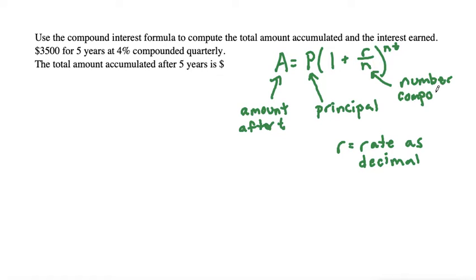Now that we have our formula and we've defined our variables, let's start plugging things in. Our total amount is what we're looking for. A equals the principal, which is the amount that we are investing, which is $3,500 in this case.